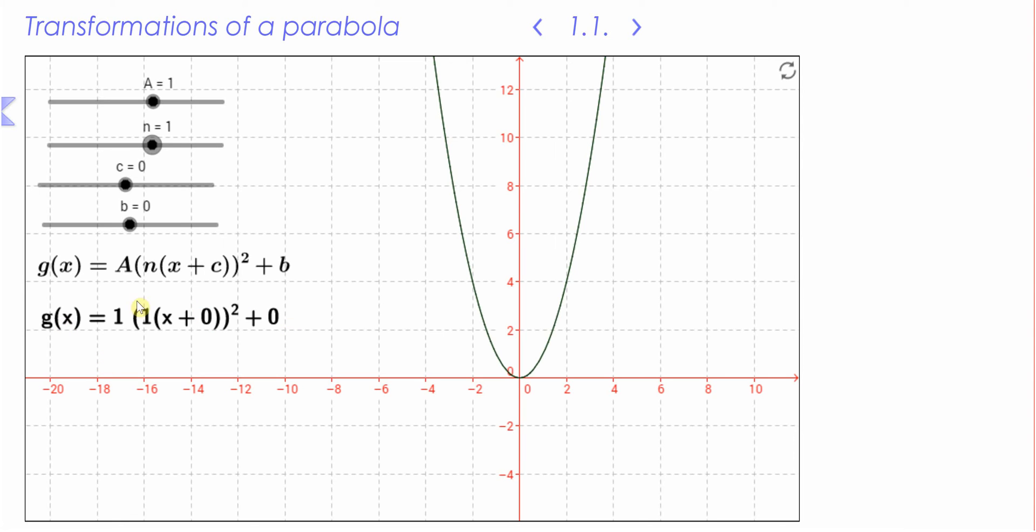This is the equation that is being displayed right now. What we're going to do is change all these values. This value over here we're going to call a, so at the moment a = 1, you can see that from the slider as well. a = 1, n = 1, c = 0, and b = 0.